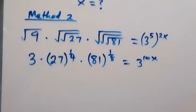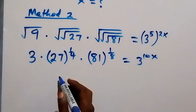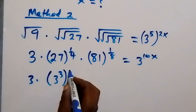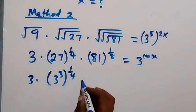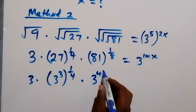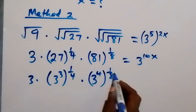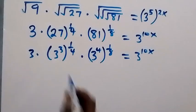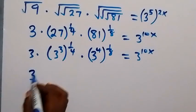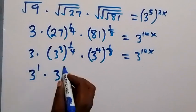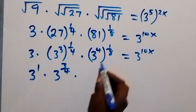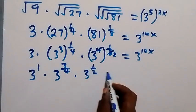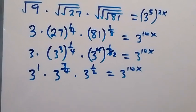In the next step, let's change 27 to base 3. We can write this as 3 raised to power 3, then raised to power 1 over 4. Also from here, 81 is 3 raised to power 4, then raised to power 1 over 8, equals 3 raised to power 10x. Since this power multiplies, this becomes 3 raised to power 3 over 4, then times 4 over 8 simplifies to 3 raised to power 1 over 2, equals 3 raised to power 10x.